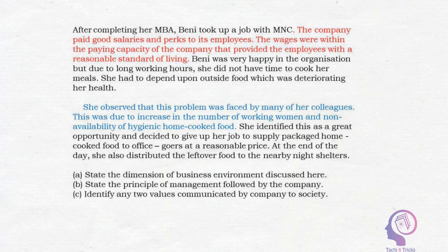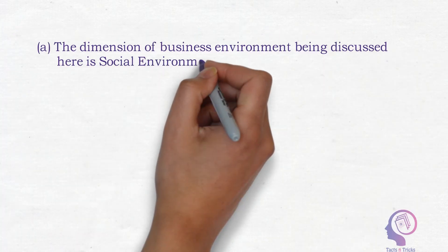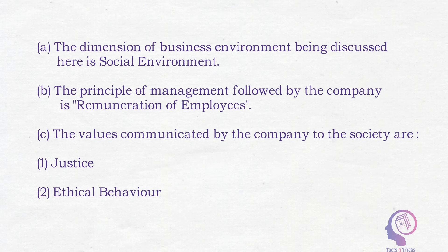We have to discuss all three things from the company's point of view. Number one, the dimension discussed here is social environment, because this problem is suffered by many people in society. Number two, the principle of management followed by the company is remuneration of employees, because it is paying a good pay scale to all employees as per the capacity of the company. Number three, the values communicated to society are: first, justice, because it is treating all employees equally and paying a good pay scale; and second, ethical behavior, because it is providing a good standard of living to all employees.